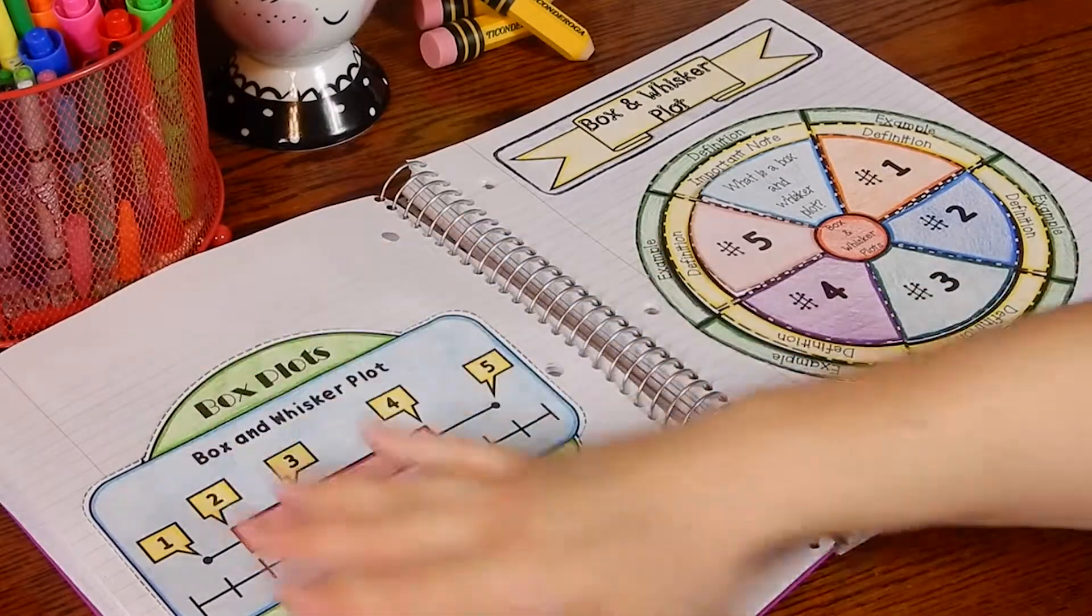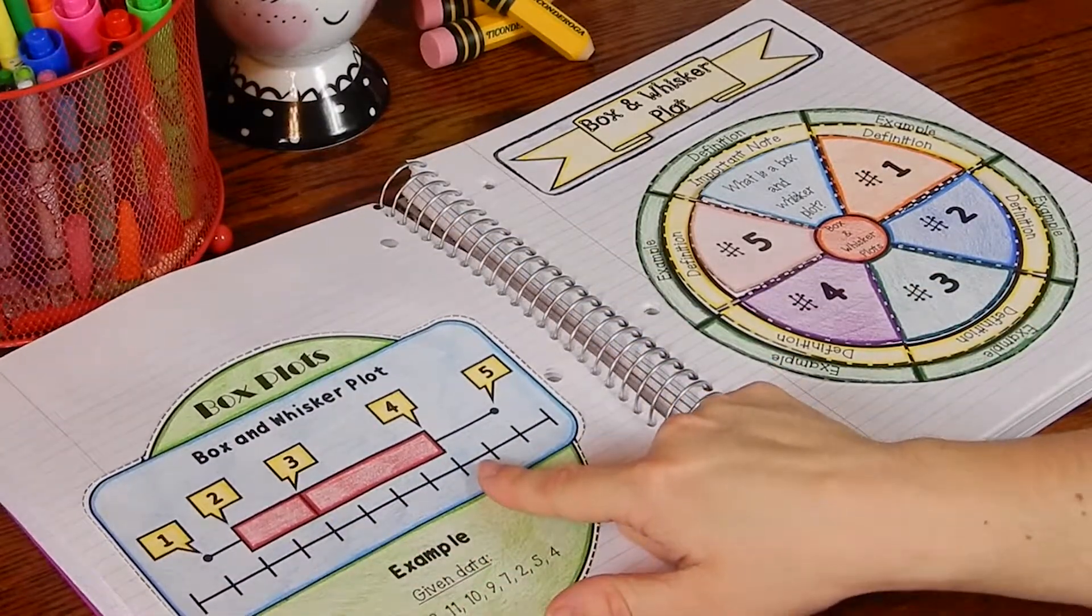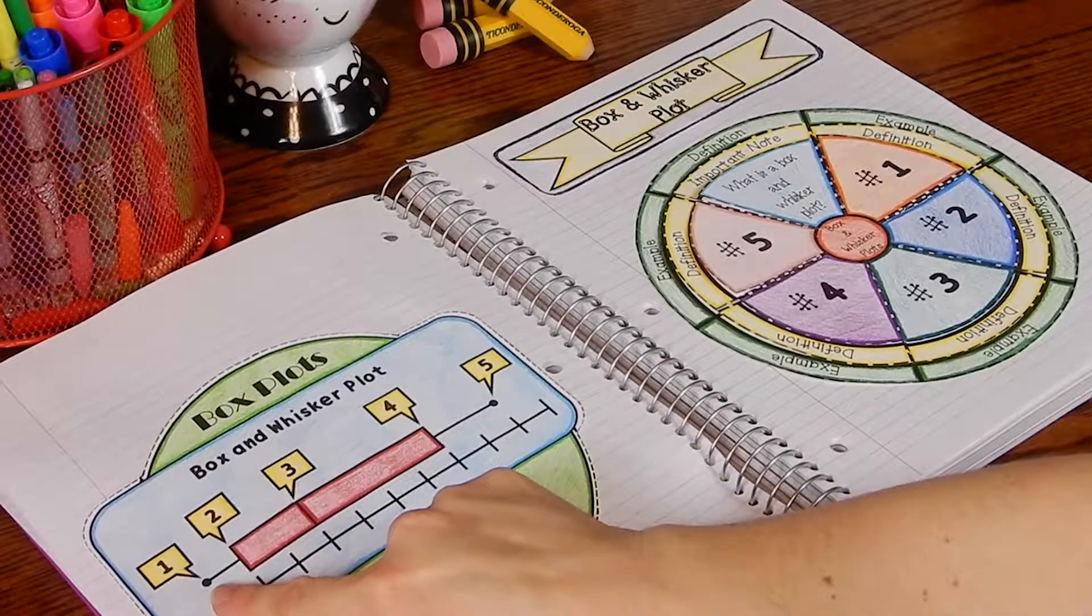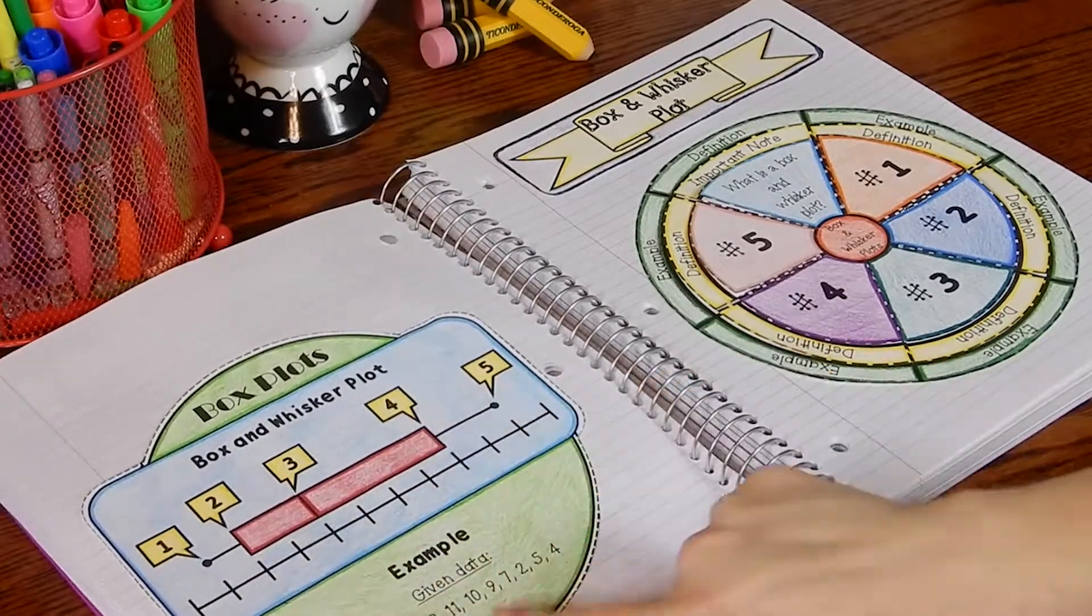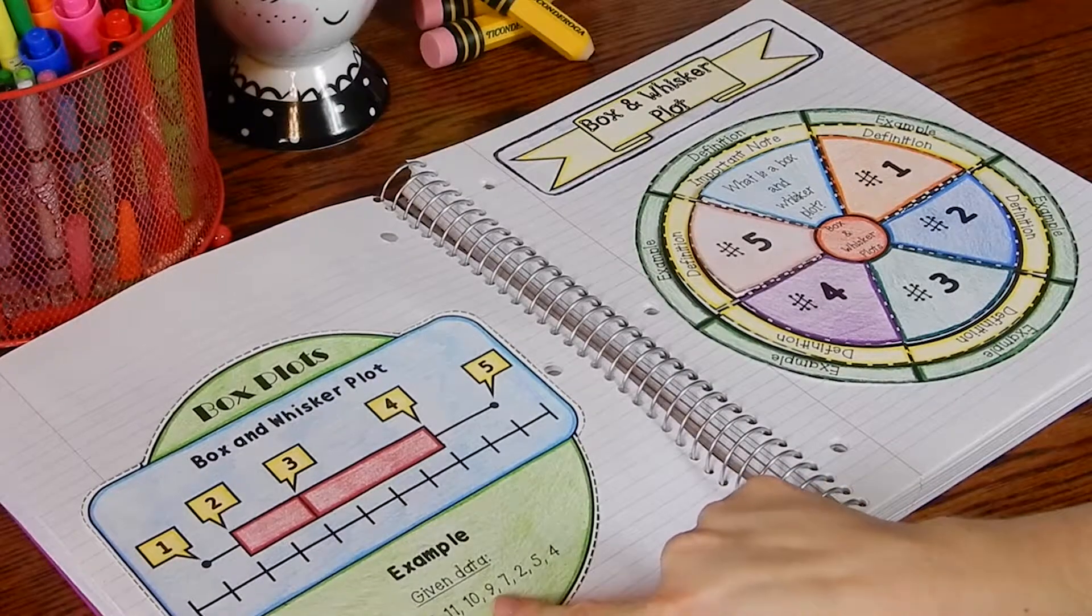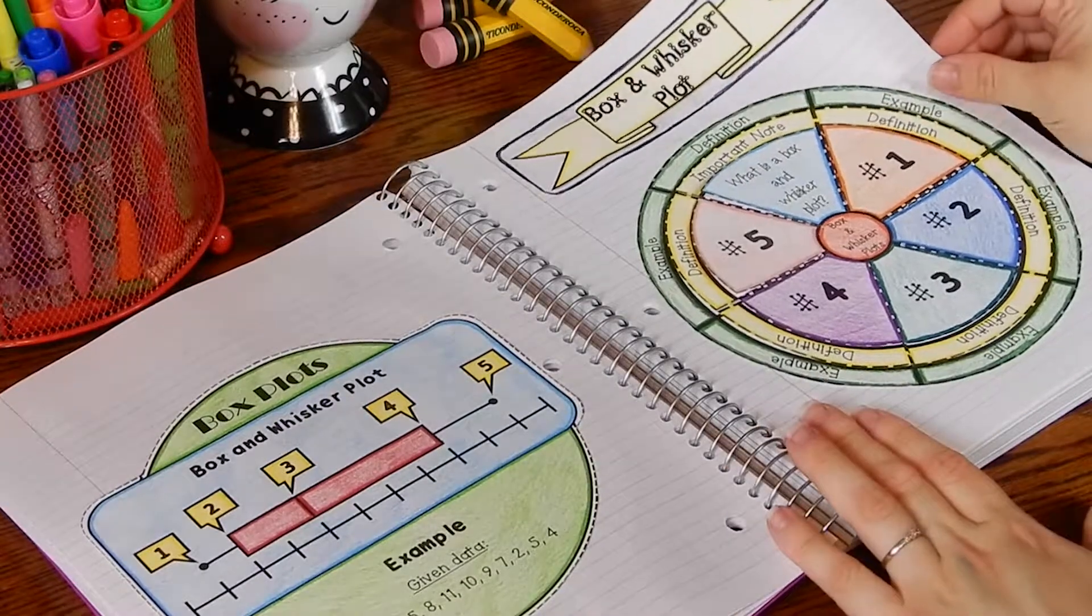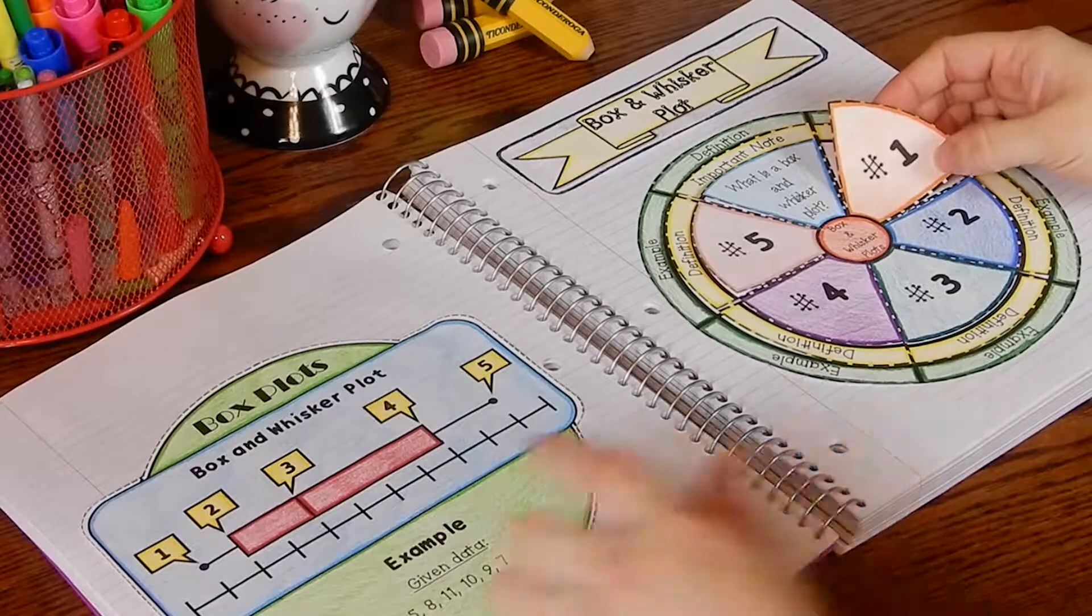I like to glue it where students have this on the left side so they have a picture of a box and whisker plot labeled with one, two, three, four, and five. It gives an example. Here is some given data and students will, with their wheel foldable, have to determine what is number one.